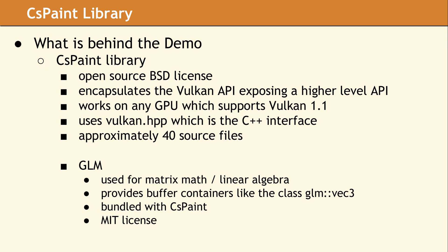The demo we just showed links with a library called cspaint, which provides a higher-level abstraction using the Vulkan API. Cspaint will work on any system which supports Vulkan 1.1 and makes use of the C++ interface provided with the Vulkan API. Cspaint currently consists of around 40 source files, most of which are fairly small wrappers used to encapsulate the Vulkan API. Cspaint includes GLM, which is an MIT-licensed linear algebra library providing container types needed to interface with Vulkan, such as a three-dimensional vector. Since the GLM library is bundled with cspaint, the only external dependency is really the Vulkan API.